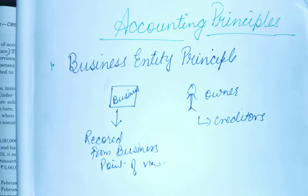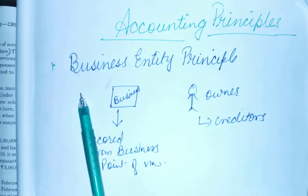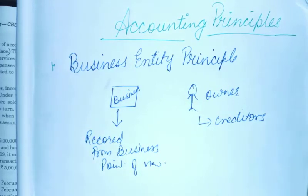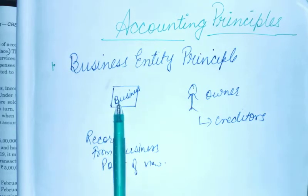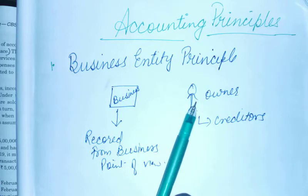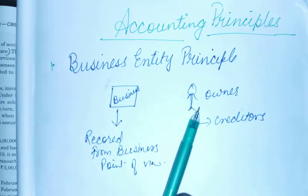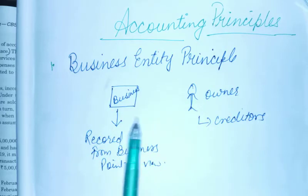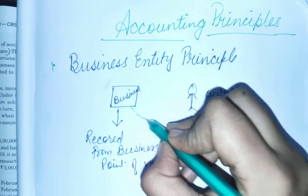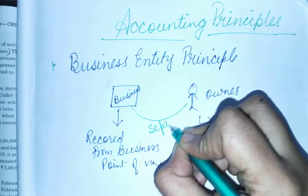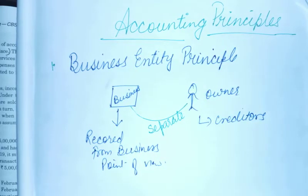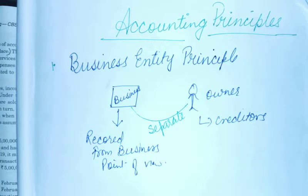We already discussed 3 accounting concepts or assumptions. The first is the Business Entity Principle. In this principle, it is said that business and businessman — that is, business and its owner — दोनों अलग अलग चीज़ें हैं, meaning they both are separate entities.